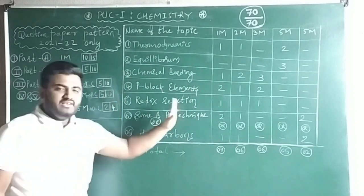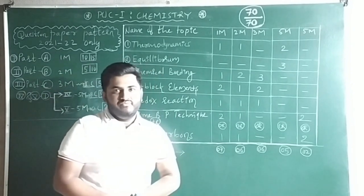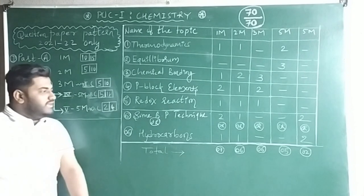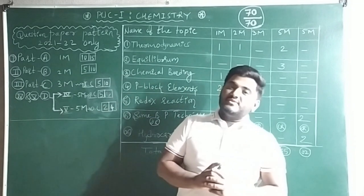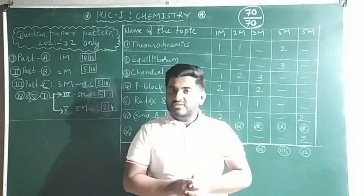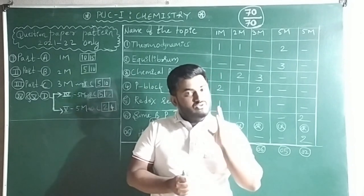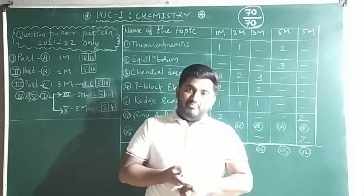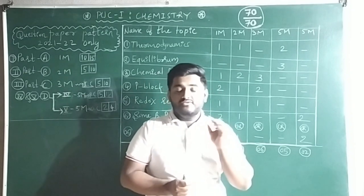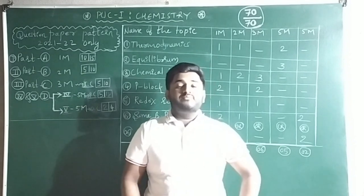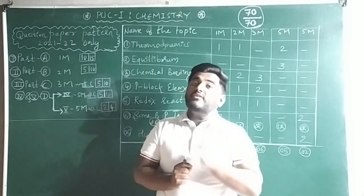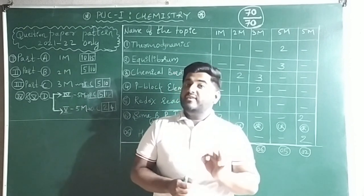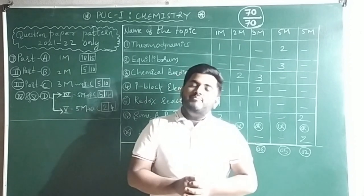If you study all of this, you will definitely score 70 out of 70 in the annual examination. You can take a screenshot if you like. Important questions chapter-wise for First PUC Chemistry are already uploaded on the channel. In the next video, we'll discuss how to score 100 out of 100 in mathematics by studying only 8 chapters out of 16, including fixed guaranteed questions and chapter-wise important problems.